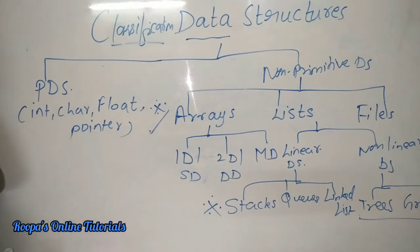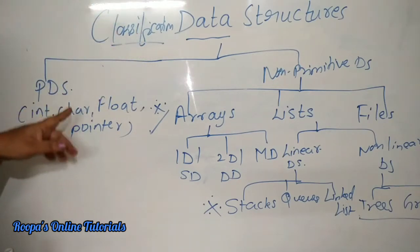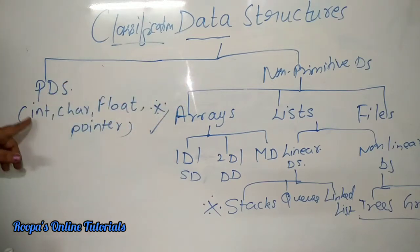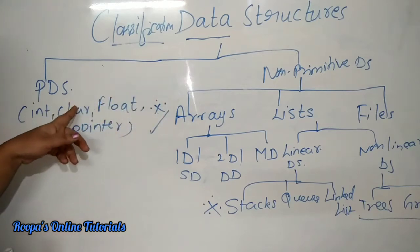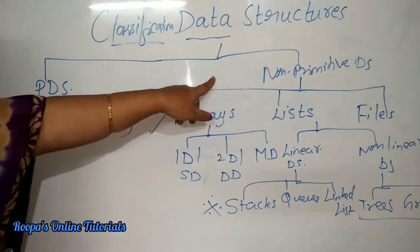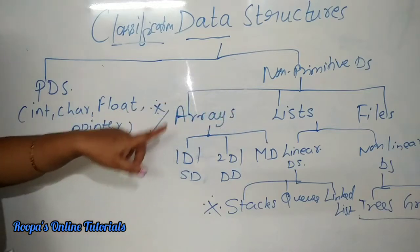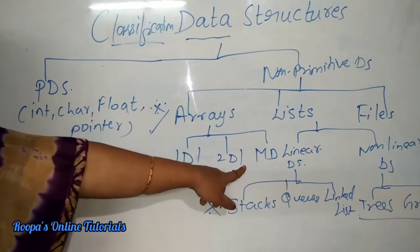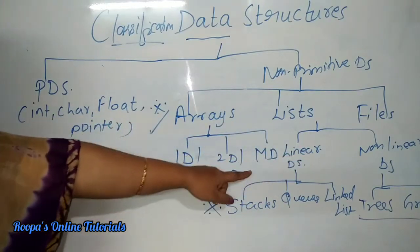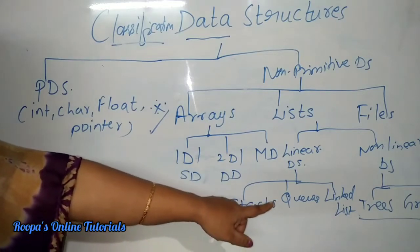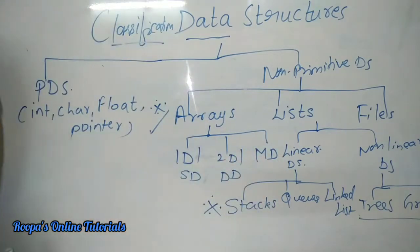Continuing with part 2 of data structures. Last class we learned about the classification of data structures — they are divided into primitive and non-primitive. Primitive data structures are machine-level instructions, and non-primitive are complex structures derived from primitive ones. Non-primitive data structures are divided into arrays, lists, and files. Arrays are one-dimensional, two-dimensional, and multi-dimensional, and lists are divided into linear and non-linear. Linear data structures are stacks, queues, and linked lists, and non-linear are trees and graphs.